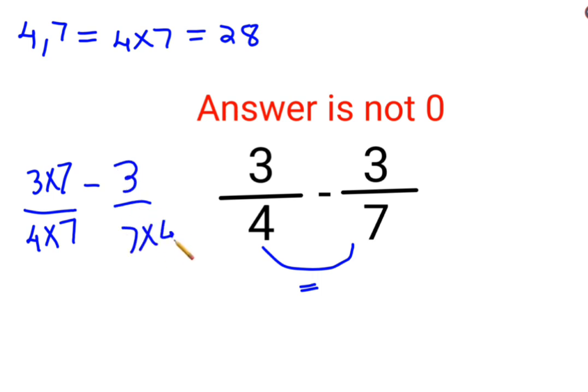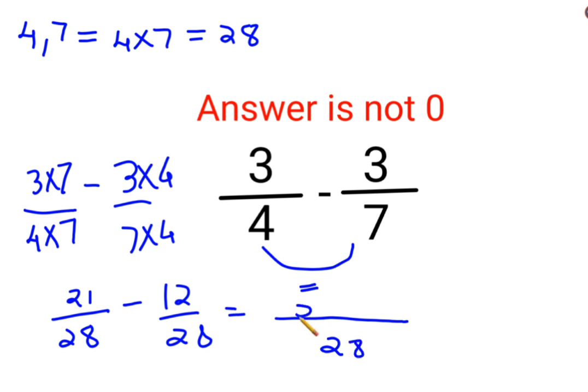So here what you get is 3 multiplied by 7 is 21 upon 28 minus 12 upon 28. Now since the denominators are same I can directly subtract the numerator. So we will have 21 minus 12. So here the answer for this question is 9 upon 28.